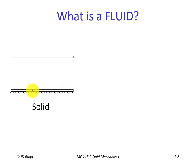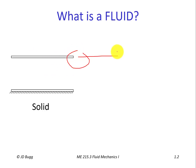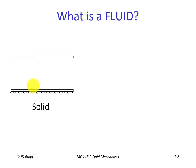Let's say we have two plates — a plate on top and a plate on the bottom, and the bottom plate is fixed. Between these two plates we have a solid material. These plates extend to infinity left and right; we're only worried about the material between them. We're going to describe a line in that material so we can see what happens when we apply a force to the solid.